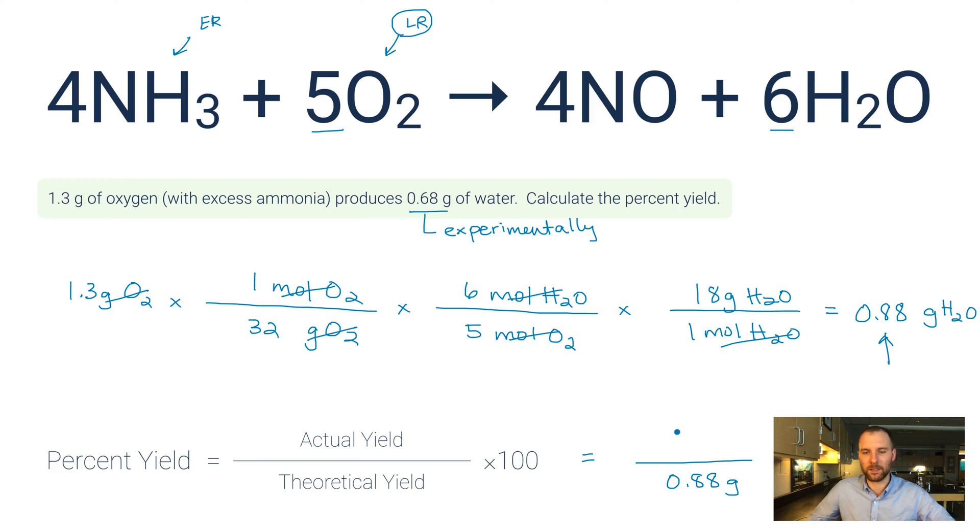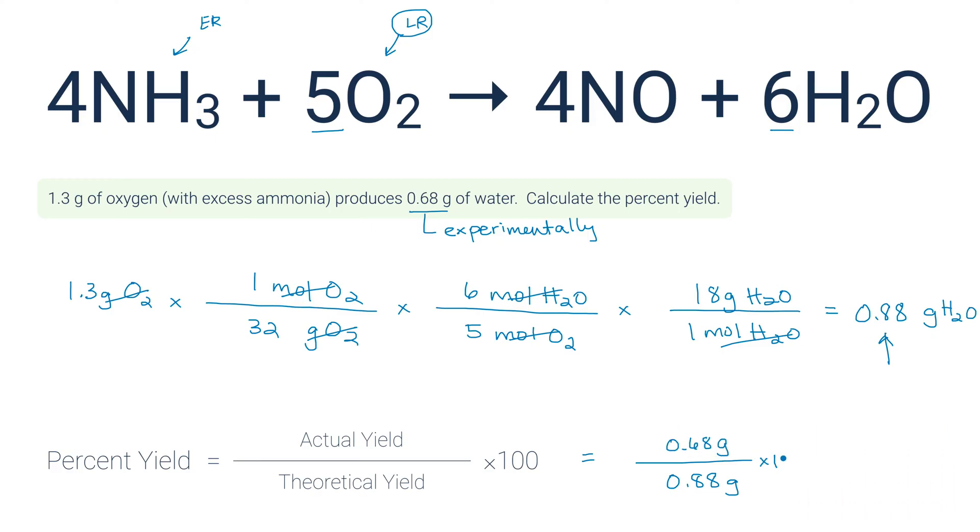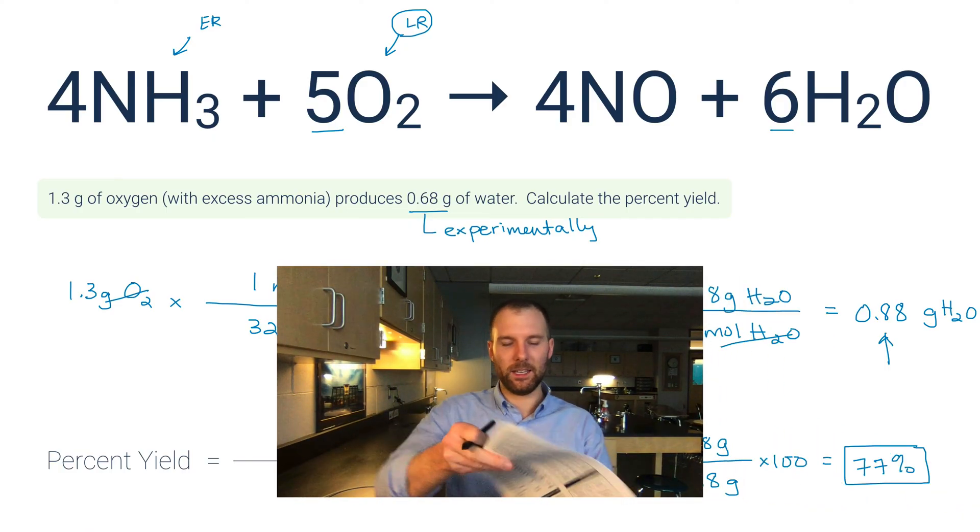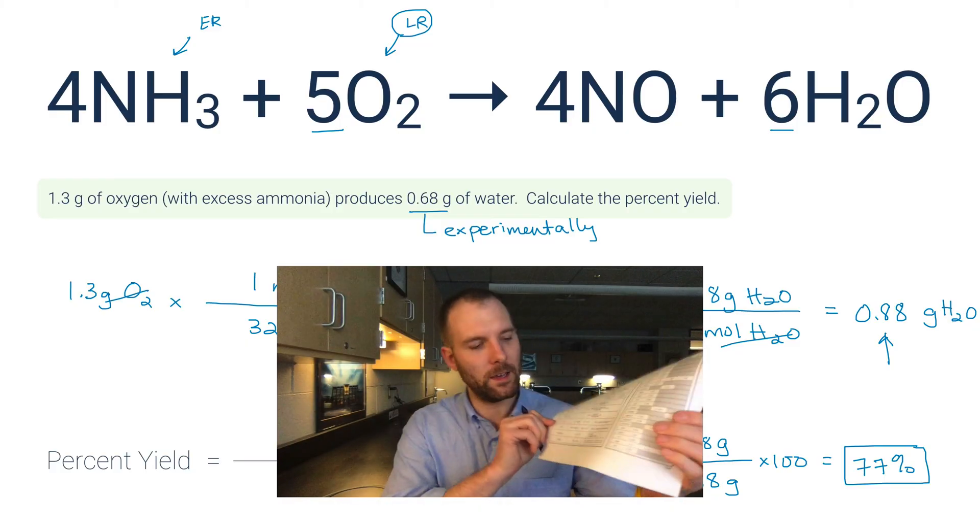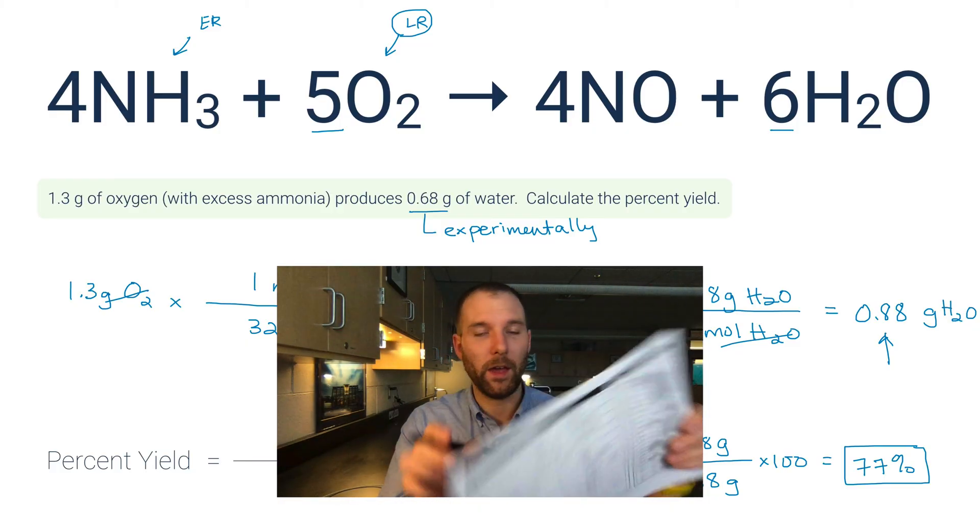So we're going to put that into our percent yield equation as the theoretical yield, 0.88 grams. But the actual yield is what the problem says was determined experimentally—that's 0.68 grams—and we just multiply by 100: 77 percent. So that's the percent yield of this reaction as described. Now if you're in my class, the percent yield equation is in your reference tables. It is on table 17, so if you're looking at table 17, you'll see the percent yield equation right there.